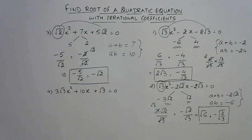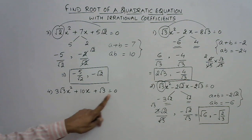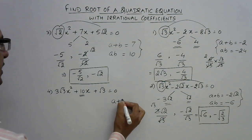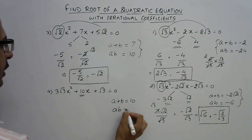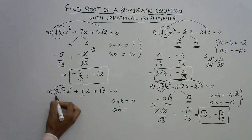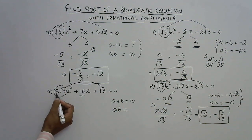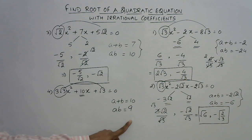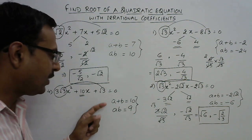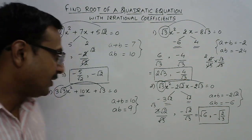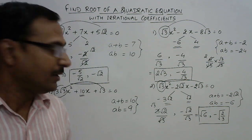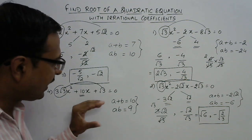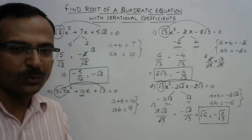Let's see the final one: 3√3x² + 10x + √3 = 0. The coefficient of x is 10, so we need two numbers whose sum is 10 and whose product is 3√3 × √3 = 9. The two factors are 9 and 1, because 9 + 1 = 10 and 9 × 1 = 9.